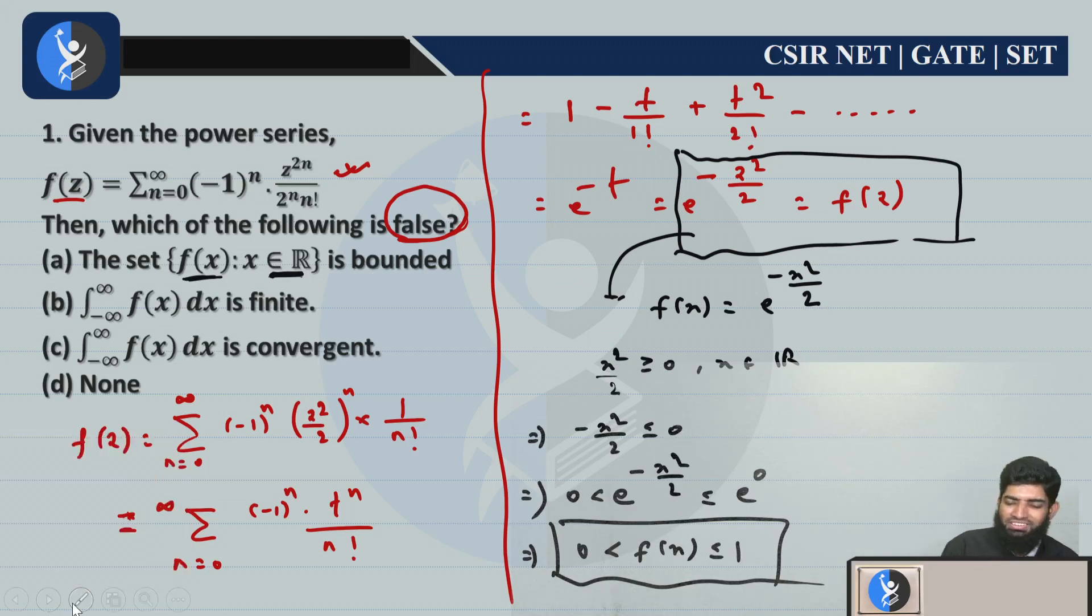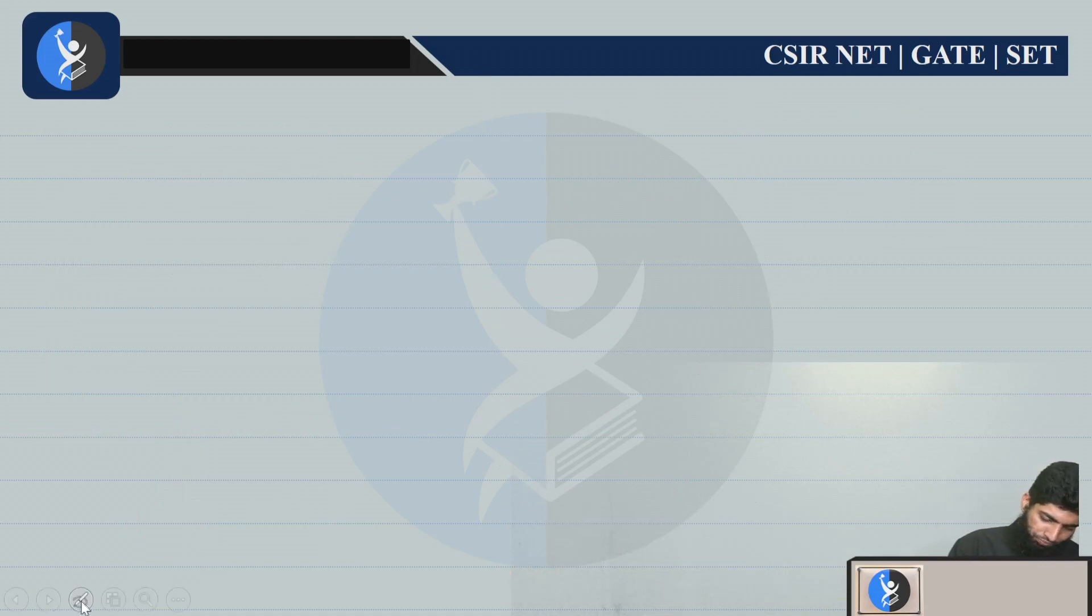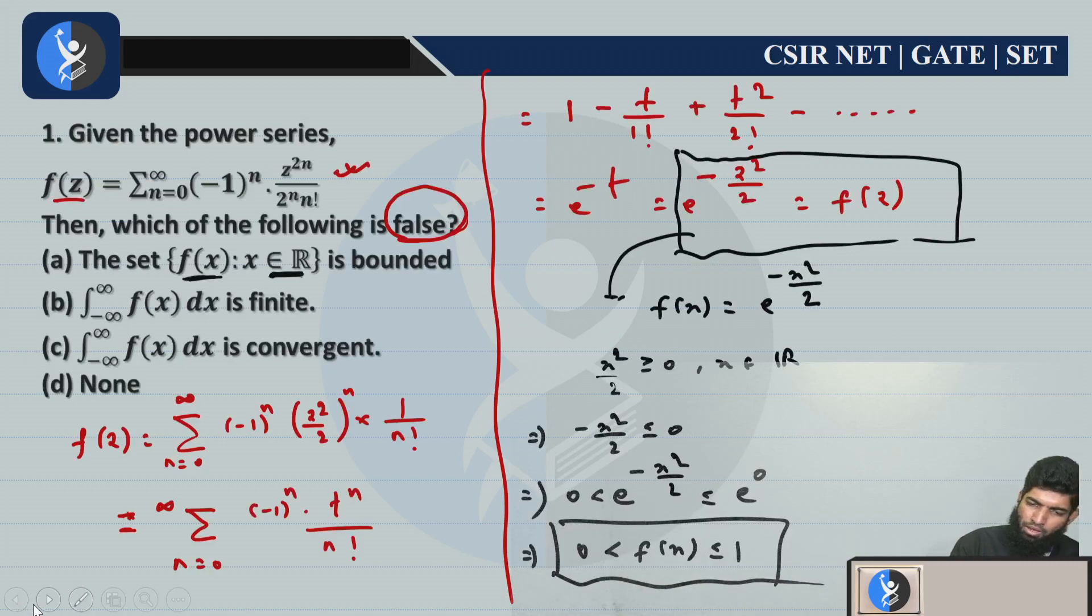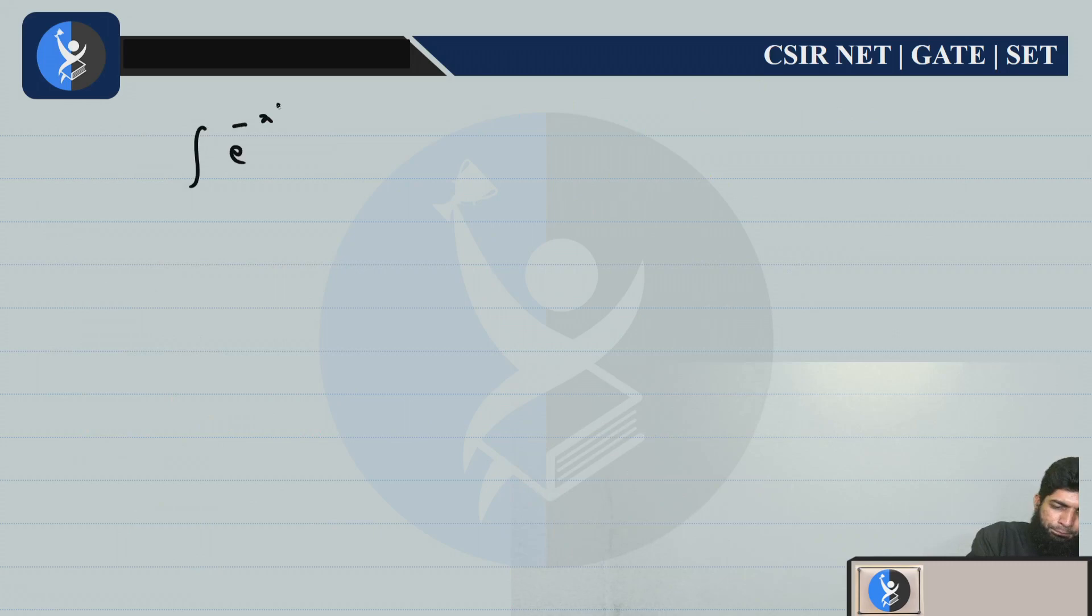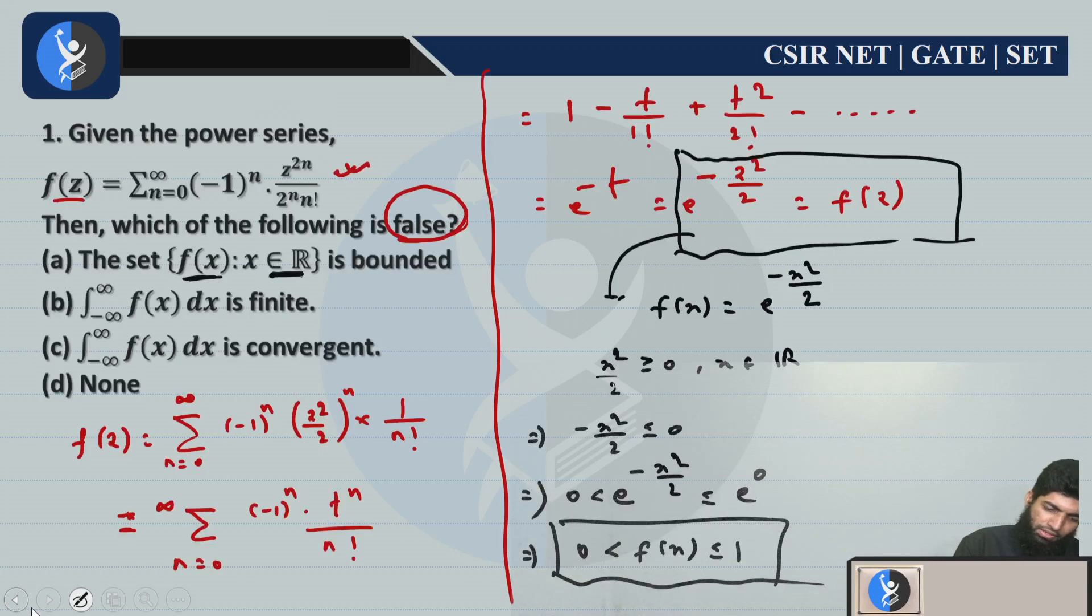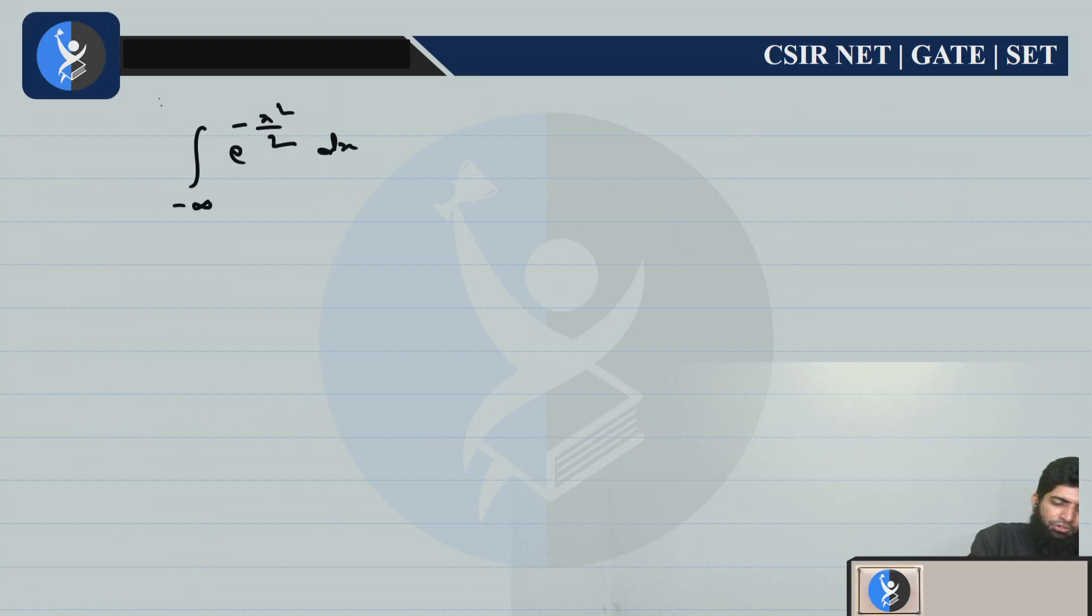Now what about this integration? The integral from minus infinity to infinity of e to the power minus x²/2 dx. Now how to solve this? Some ideas you can observe from here: first of all, this is an even function. It means you can write it as 2 times the integral from 0 to infinity.